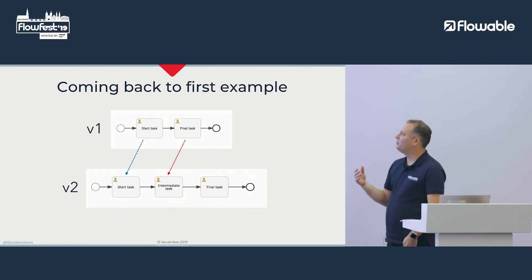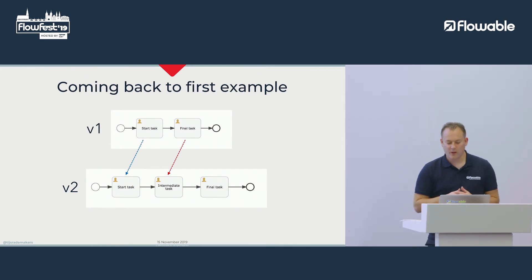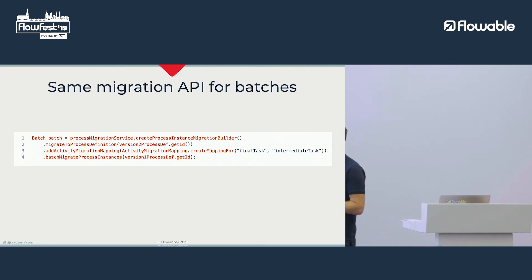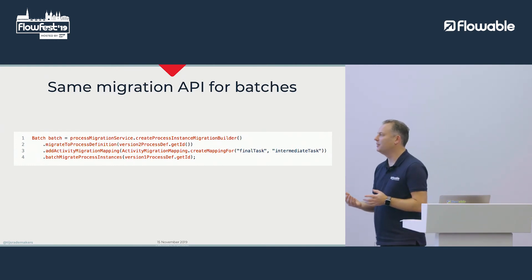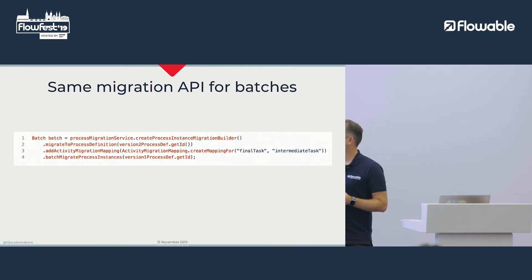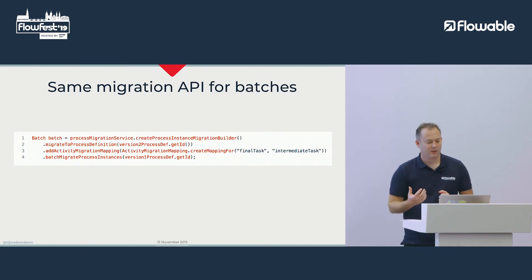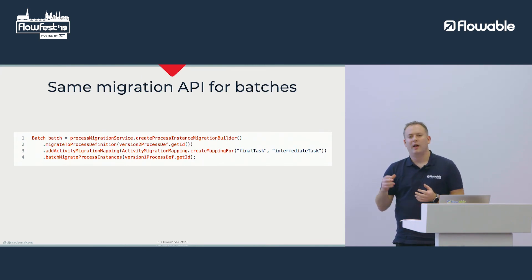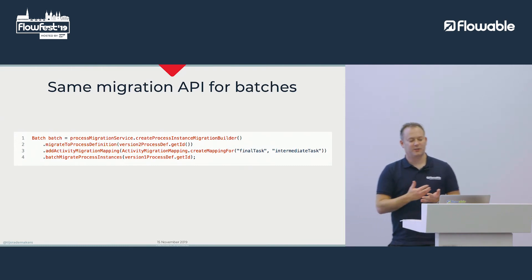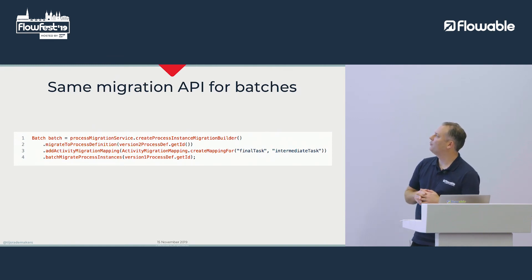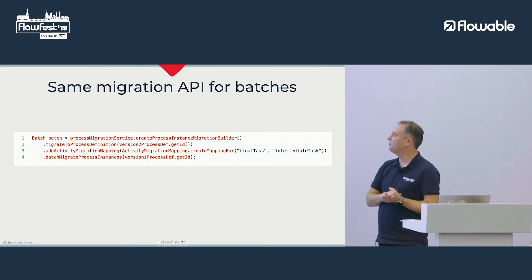Coming back to the first example — how would this now work in the batch way? We're still creating the mapping definition in exactly the same way. Instead of calling migrate process instance for a specific process instance ID, we call batch migrate process instances. And instead of passing the process instance ID, you pass the process definition ID. If you have a thousand instances running for that version one process definition, it will create a batch with a thousand batch parts.